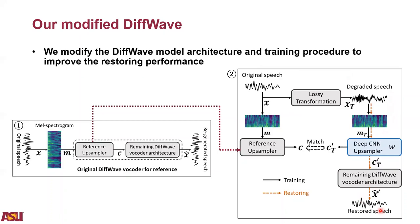By using this modification, we solve the problem of the DiffWave-CNN upsampler being hard to train in the original setup. It also benefits training time: it takes about 48 hours on one Titan XP GPU to train a full DiffWave model, but we only need 6 hours to train a DiffWave-CNN upsampler. Our design can also be adapted to new applications easily.